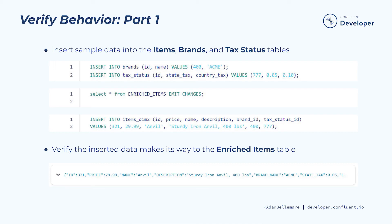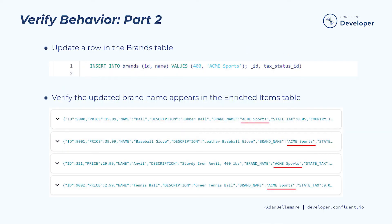First, you will insert sample data into the items, brands, and tax status tables and verify that the data makes its way to the enriched items table. Then you will update a row in the brands table and verify that the updated brand name appears in the enriched items table.